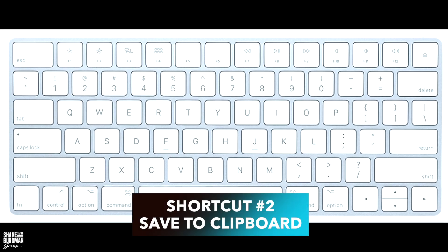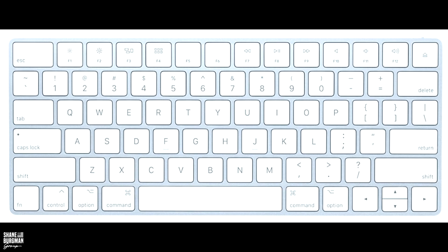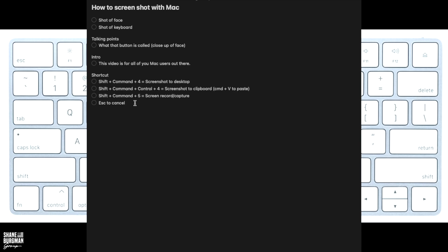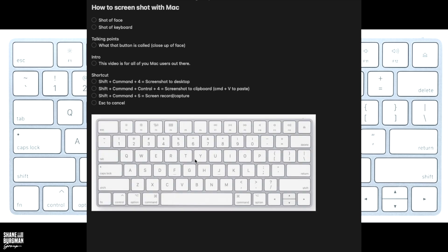For shortcut number two — this is the one I use most often — it's going to save a screenshot to your clipboard. It's Shift, Command, Control, and then 4. The crosshairs show up and you select what you want, but instead of saving to the desktop, it saves to your clipboard. You then have the ability to paste it wherever you'd like — email, text, or a document. Just up to you.